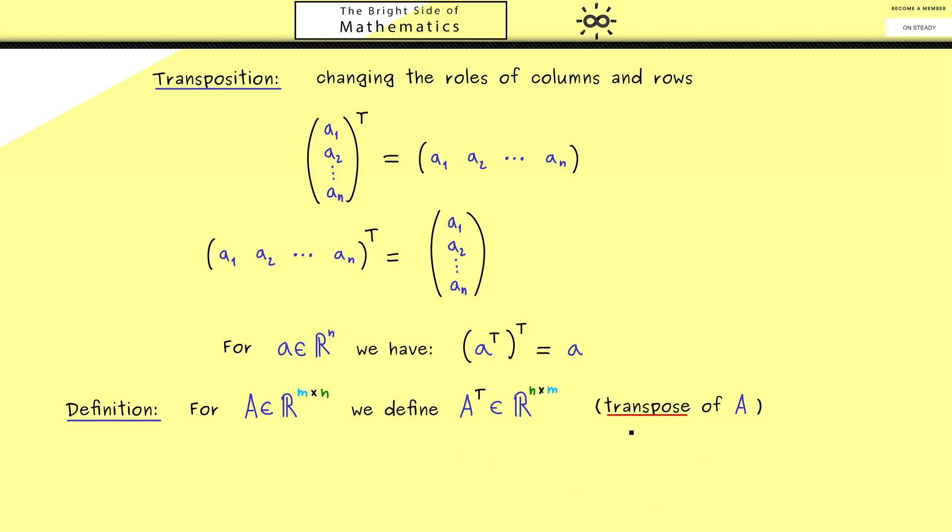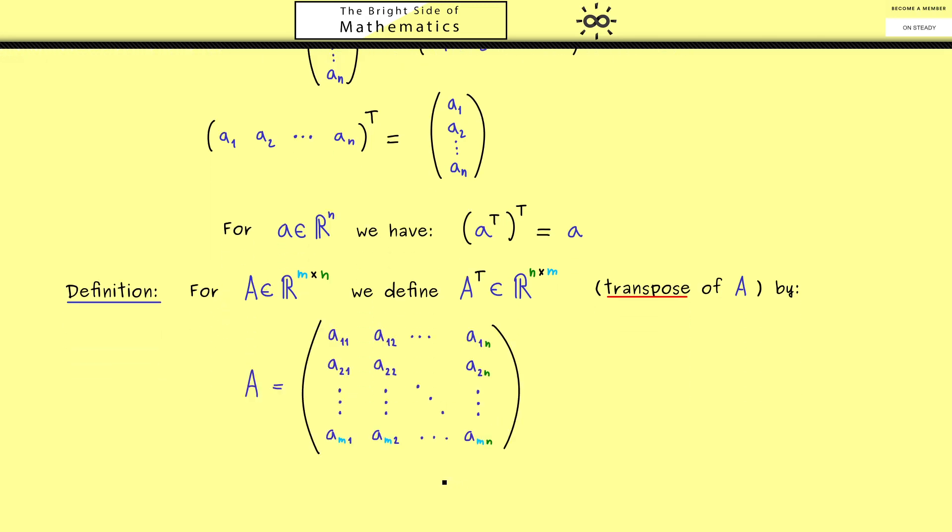Okay, and now you should know the definition here. If we look at the column in A, so maybe the jth column, then this should be now the jth row in A^T. On the other hand, the jth row in A is now the jth column in A^T. Therefore, it's not hard at all to write this down as a formula. We have our matrix A with the entries, where we see that we have n different columns and m rows.